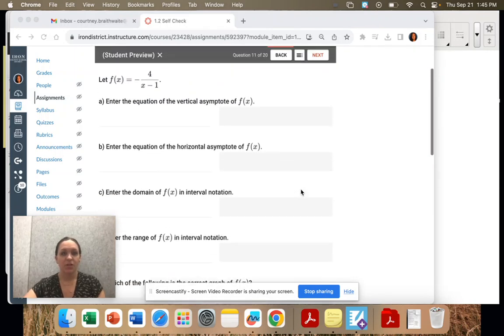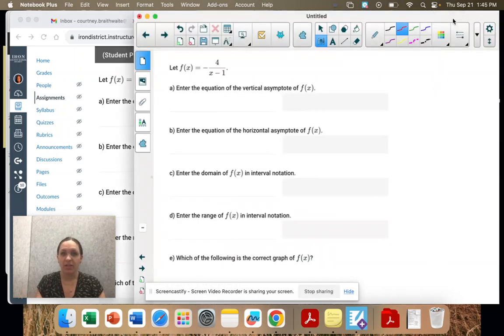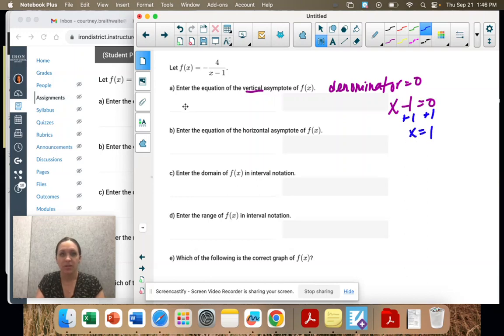Number 11, it's what we've been doing. We need a vertical asymptote and a horizontal and then domain and range. So for the vertical, we take the denominator and we set it equal to zero. So I have x minus 1 equals 0 to solve x equals 1. That's our vertical asymptote.